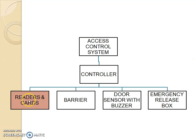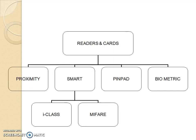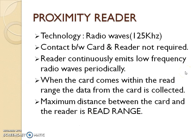An effective log is created in the system. The readers and cards are part of the access control systems. Here you can see there are a variety of readers and cards, like proximity card, smart card, and within the smart card you will also see iClass and MyFare. There are also systems which are part of access control like pin pad and biometric devices, which we will see in the continuing lecture.